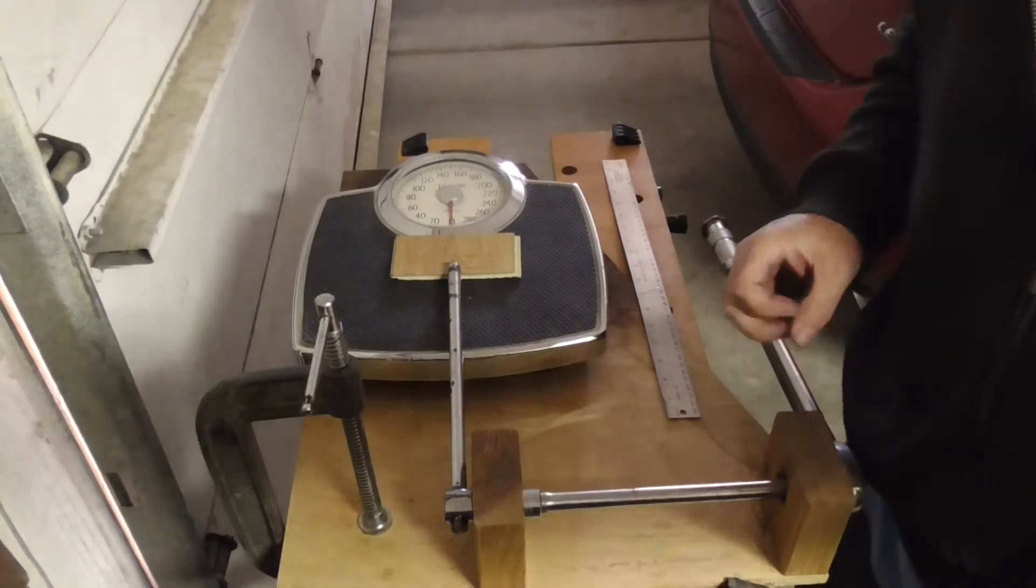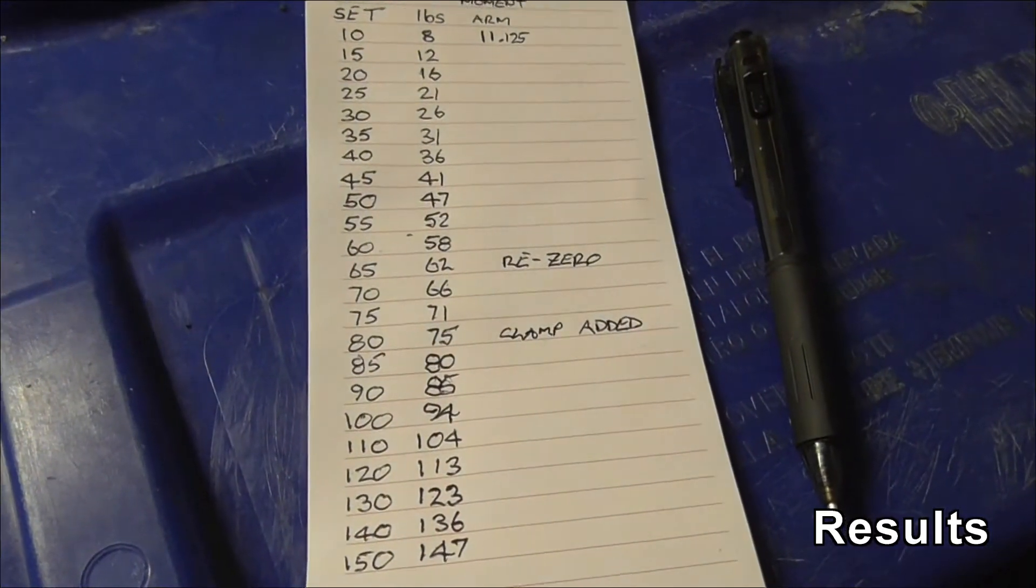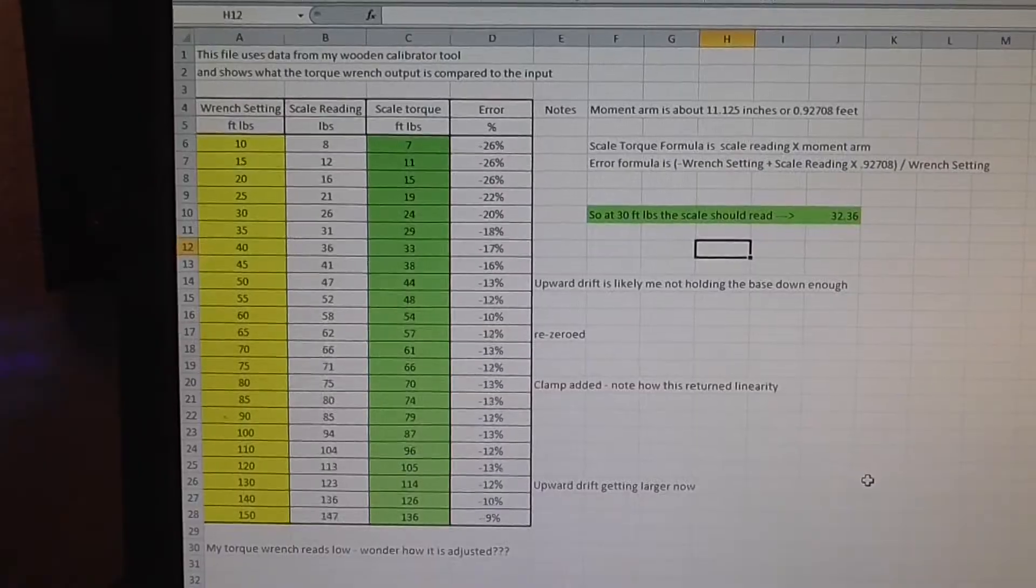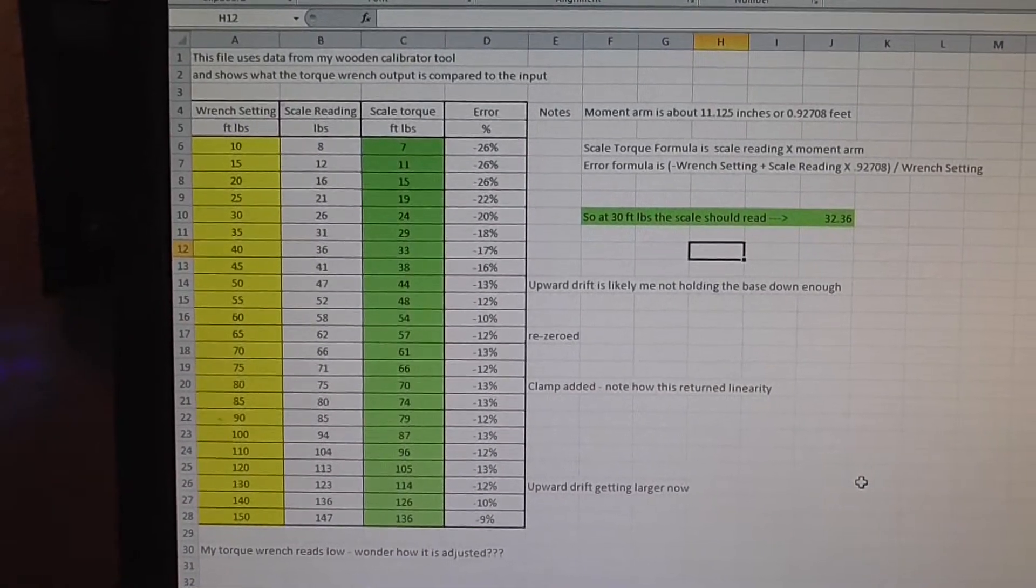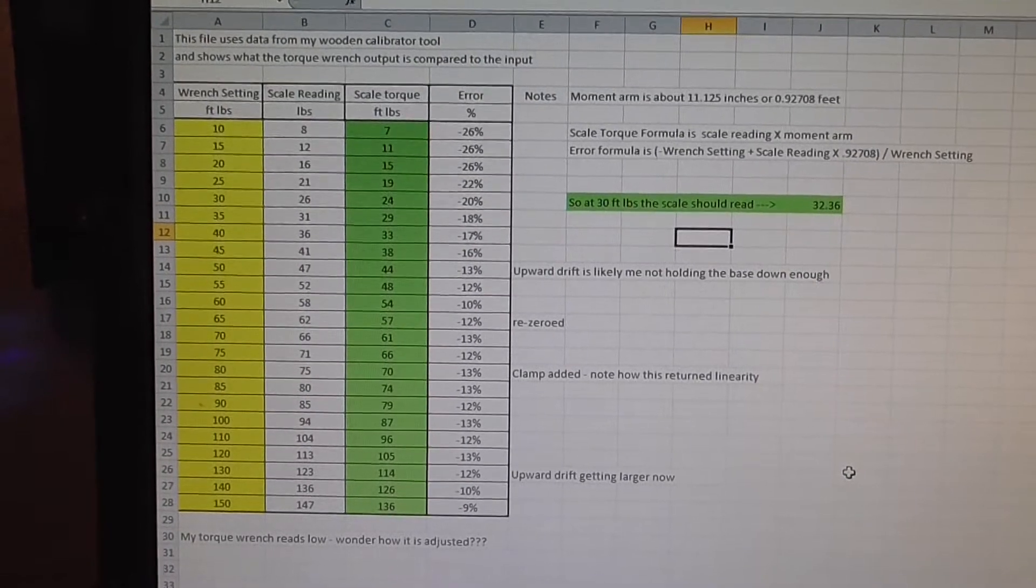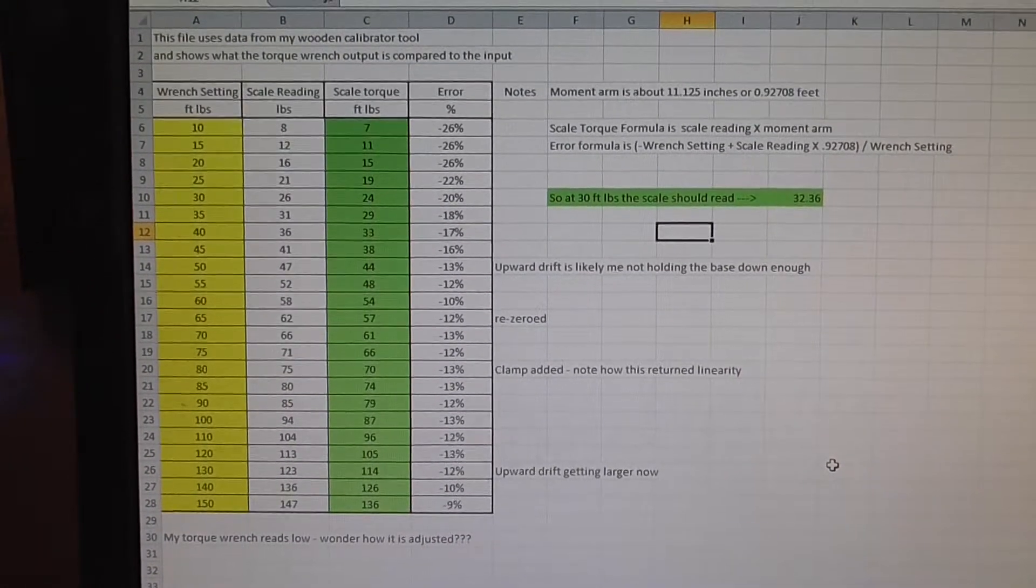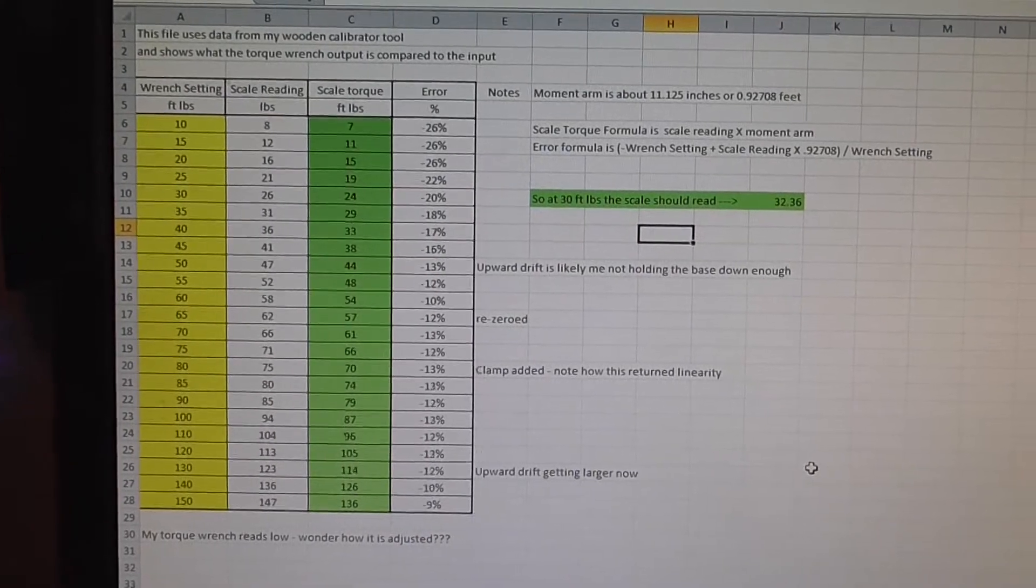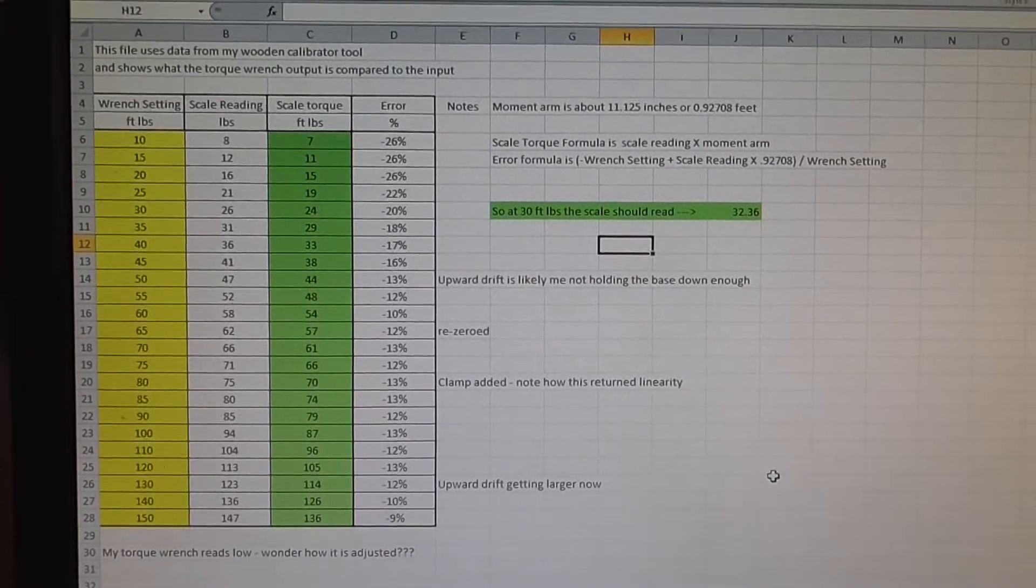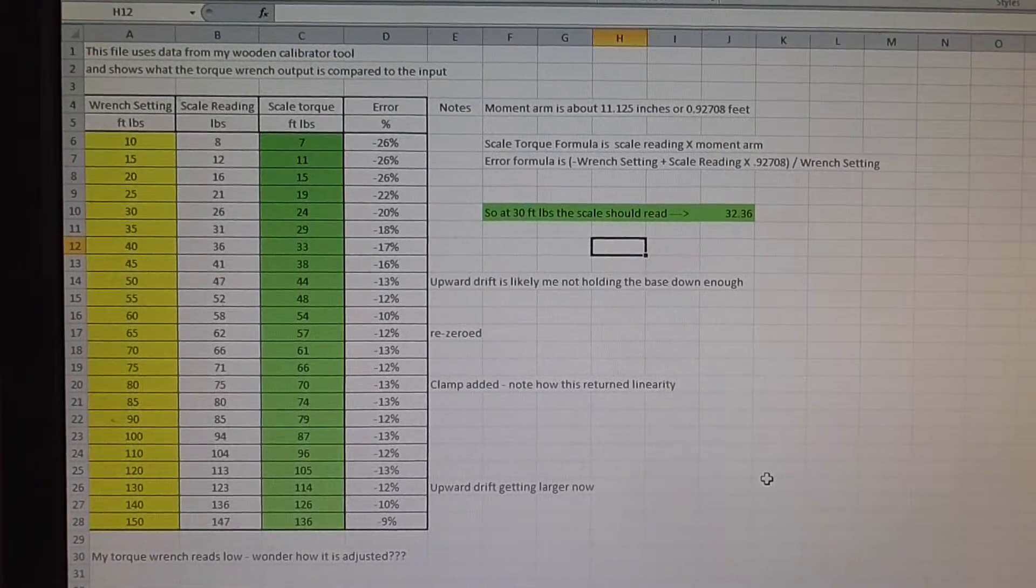Right, now it's time to do some math. There's the result data set, ready for conversion. So after putting the data into an Excel chart and figuring it all out, my torque wrench reads low. So now I have to calibrate it. How do you calibrate it? Well, luckily I found a website that tells me how, so now I'm going to go out and see if I can actually do it.